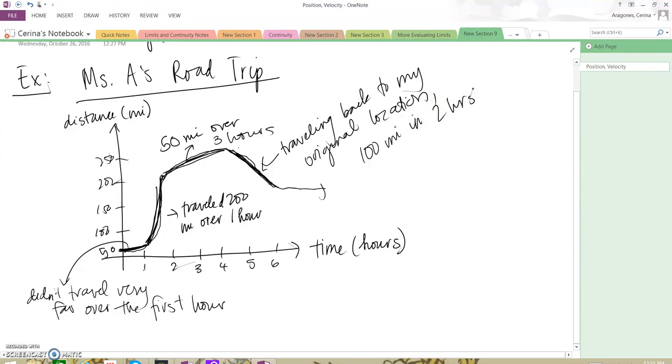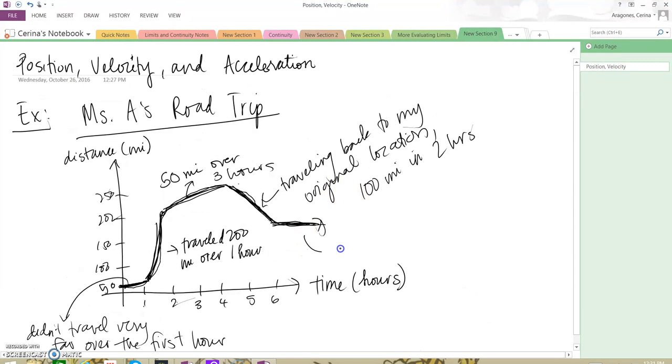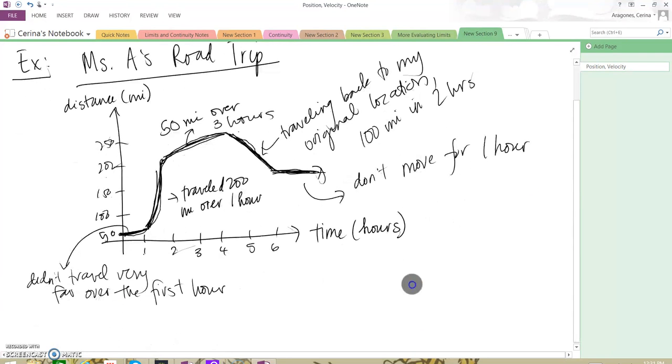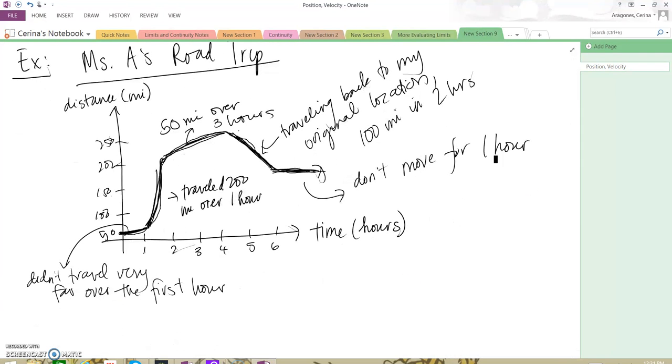And then this last part, I don't travel any distance at all. My y value doesn't change. It stays at 175 for the next hour. Then here, I don't move for one hour. So analyzing my distance-time graph, you can tell a little story.